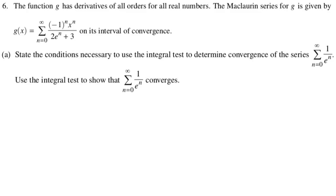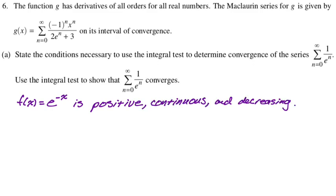Part A, state the conditions necessary to use the integral test to determine convergence of the series, the sum from zero to infinity, one over e to the n. Alright, integral test. You need the function to be positive, continuous, and decreasing. So those three things, so I'm basically going to write that down. f of x in this particular case would be e to the negative x because we're summing up one over e to the n. So f of x is e to the negative x, and that is definitely a positive, continuous, and decreasing function. We don't need to prove it. It just says state the conditions necessary. Those are the conditions, and it happens to satisfy them.